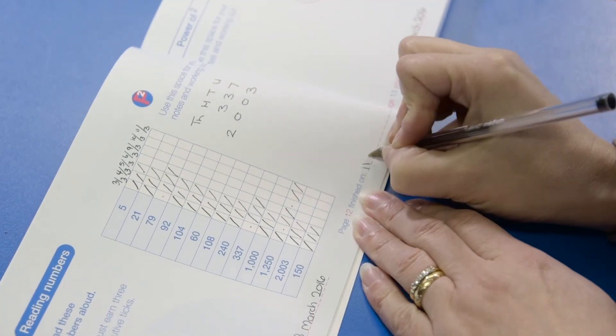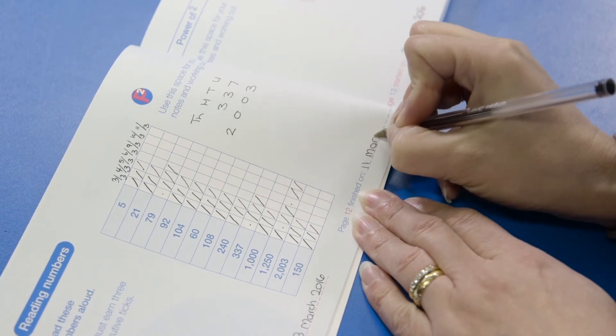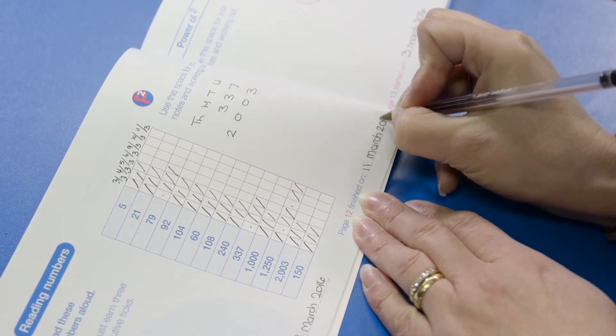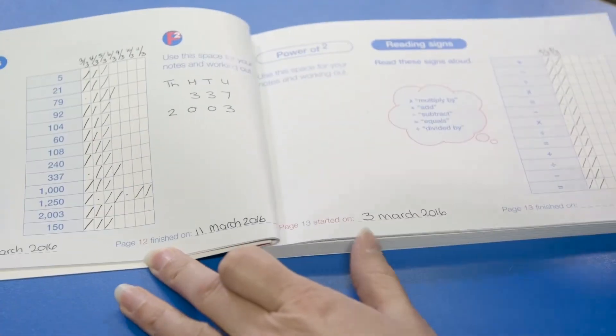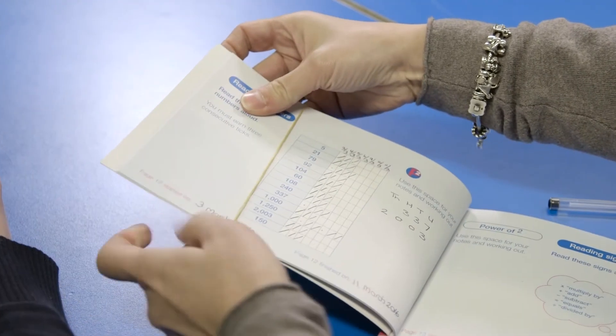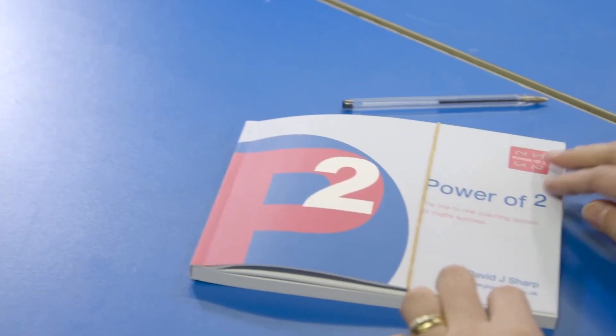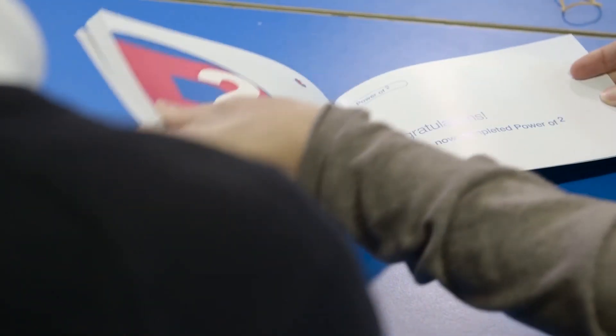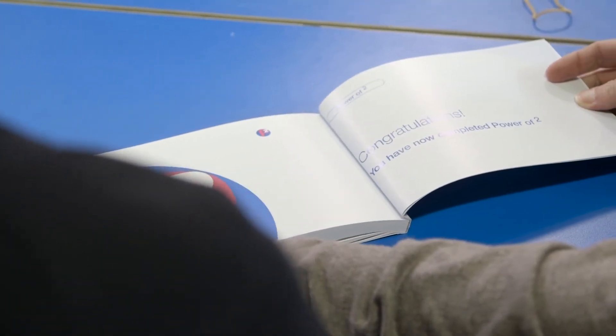Write the finished date on the page when all the questions on it have three consecutive ticks or you've transferred a question to a recap grid. An elastic band is great to hold the completed pages and works well in showing the progress that's been made. Continue working through the book until all the pages are finished.